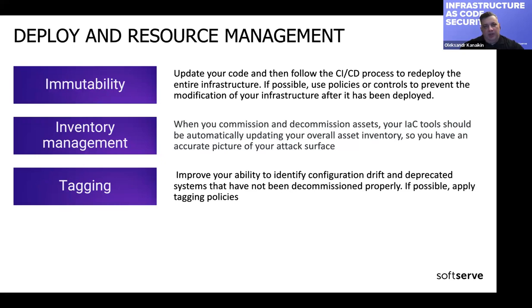At the deploy stage, we might mention immutability — it is about not allowing post-deployment changes to our resources that deviate from the code we have. If possible, we may use policies or controls to prevent the modification of resources after they have been deployed.